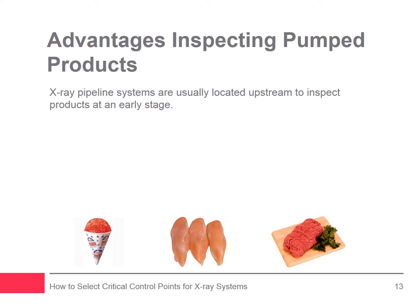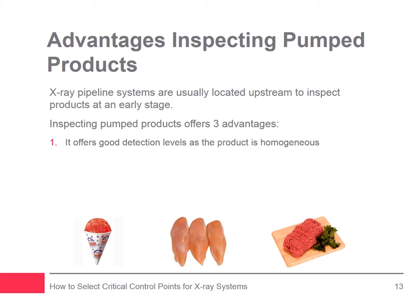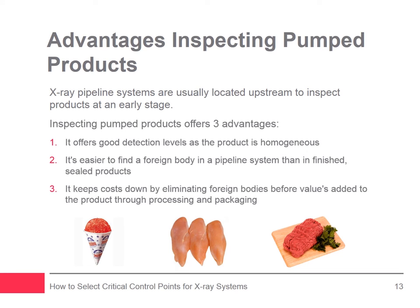Pumped products are typically slurries, semi-solids, and fluids before final packaging. Typical applications include sauces, jams, minced meat, whole muscle, chocolate, fruit puree, dairy spreads, and pharmaceutical slurries. Like bulk machines, an x-ray pipeline system is usually located upstream to inspect products at an early stage. It offers very good detection levels because the product is homogeneous and usually pumped through an inspection manifold that's 50 millimeters deep or less. It's much easier to find a foreign body in a pipeline system than in finished products such as glass jars, and it keeps costs down by eliminating foreign bodies before value is added through processing and packaging.